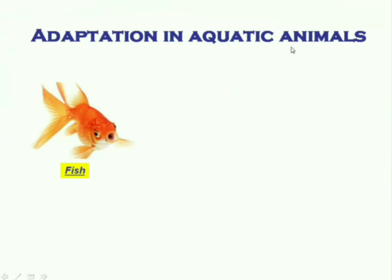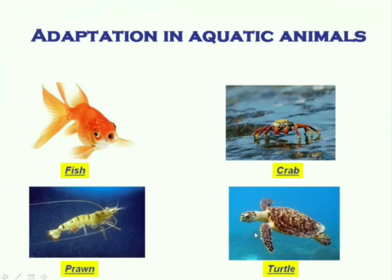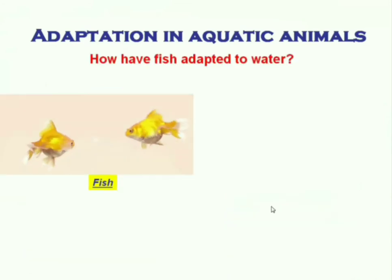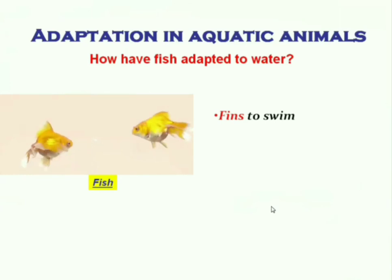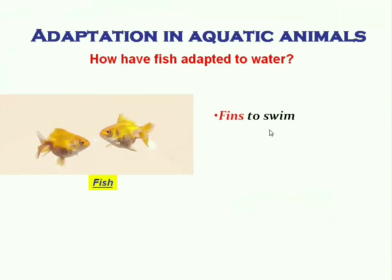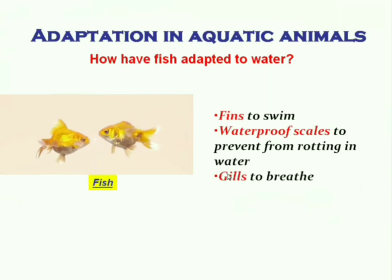Aquatic animals are animals that live in water — for example, fish, crab, prawn, and turtle. These animals have their bodies suited to aquatic life. For example, fish have fins to swim and waterproof scales to prevent rotting in water.